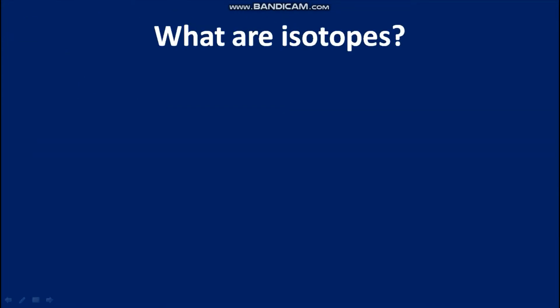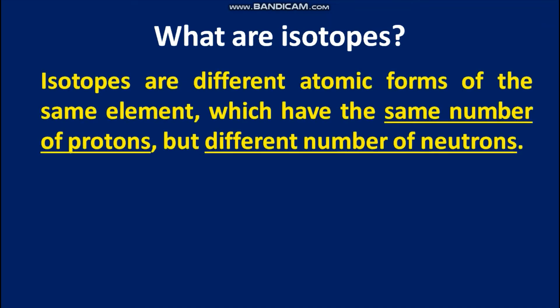What are isotopes? Isotopes are different atomic forms of the same element, which have the same number of protons but a different number of neutrons, and they also have a different mass number. If there were different proton numbers, then there would be different atoms altogether.